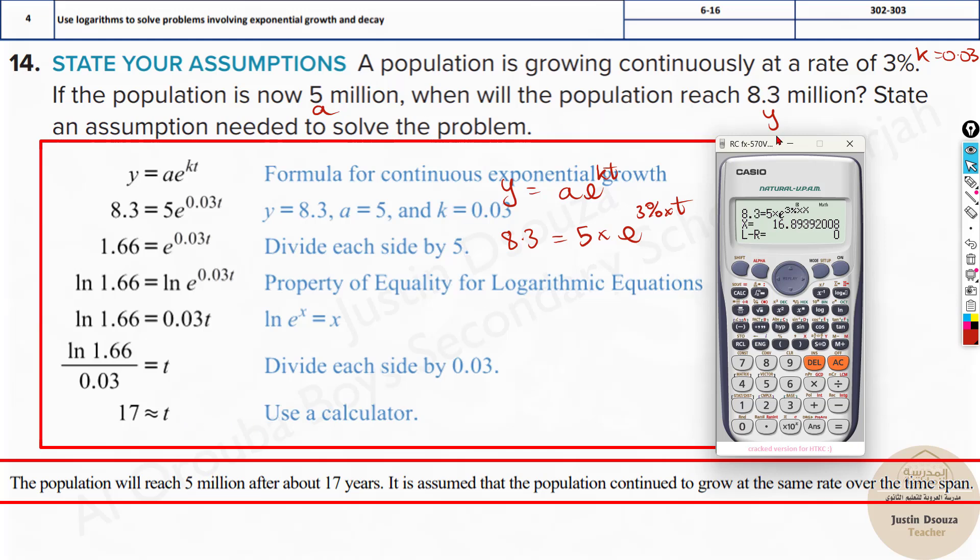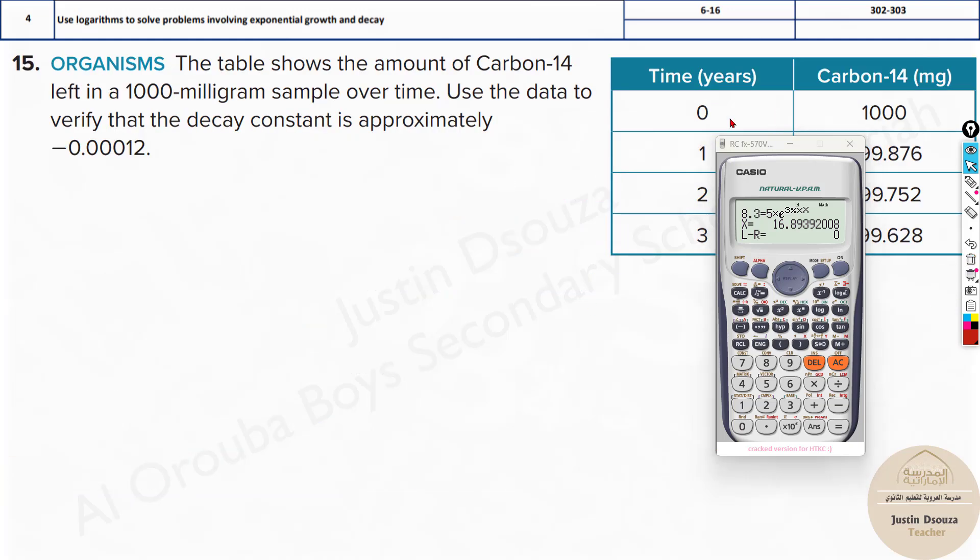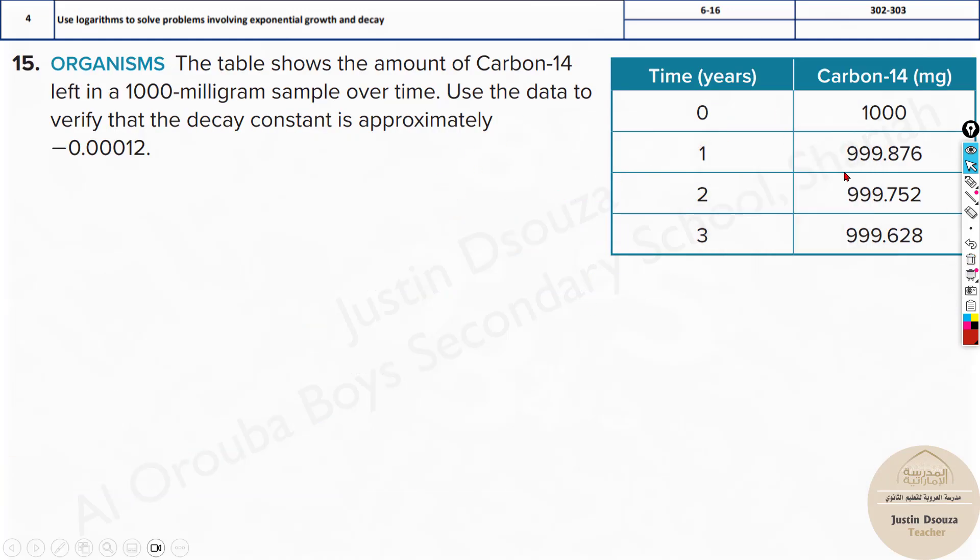That is almost 17 years. After 16.89 years, from 5 million to reach 8.3 million, it takes about 17 years. The same way, please try these problems by yourselves. I'll just go through them, but they are all very simple.